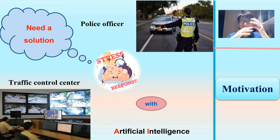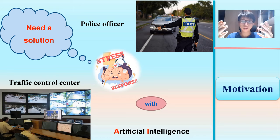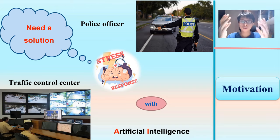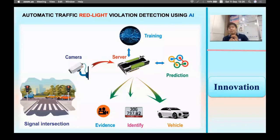Due to the advances in image processing techniques, we built a system to monitor traffic at intersections, including detecting vehicles entering forbidden roads and running red lights. However, it still requires staff to monitor. Motivated by such difficulties, our team has come up with a solution: a deep learning system for automated traffic violation detection.